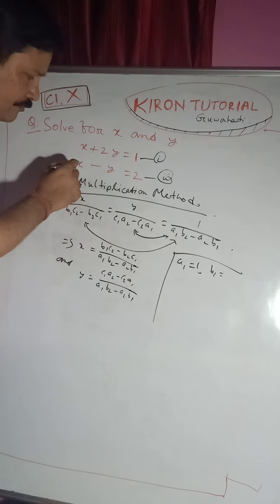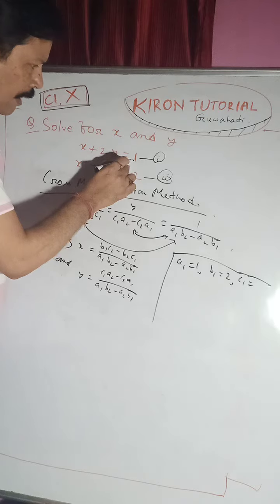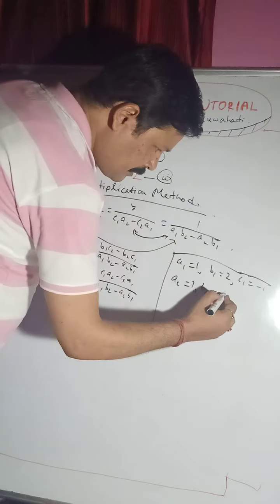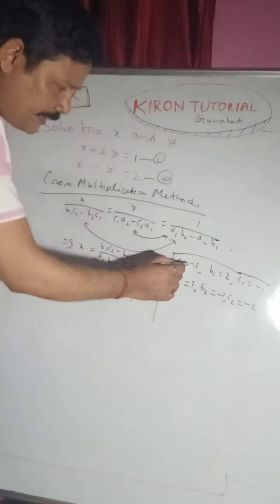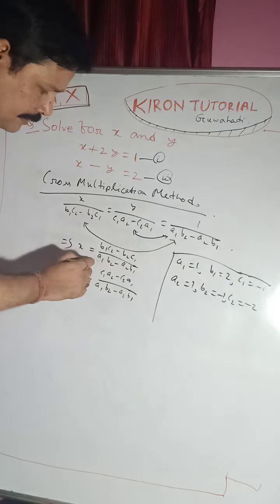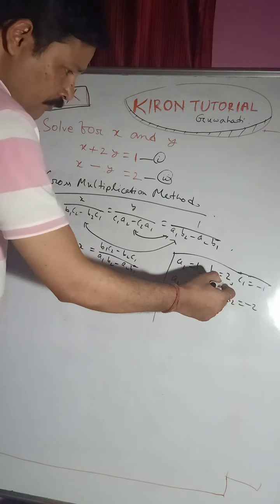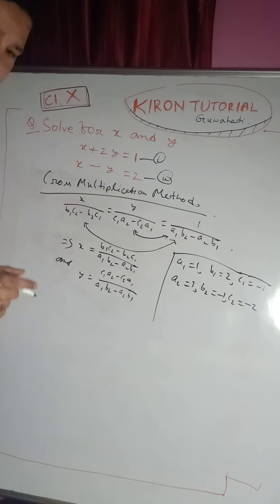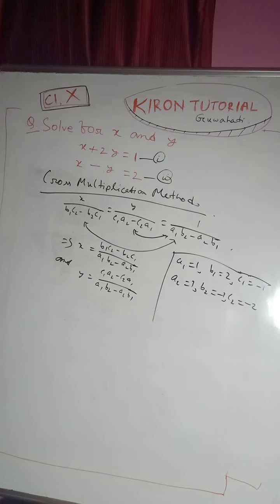From our equations, a1 equals 1, b1 equals 2, c1 equals minus 1, and a2 equals 1, b2 equals minus 1, c2 equals minus 2. Putting these values of a1, b1, c1, a2, b2, c2 into the cross multiplication formula, you will get the same answer as in substitution and elimination methods.